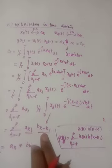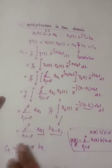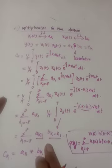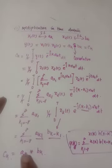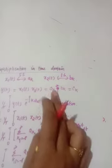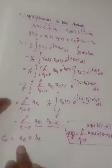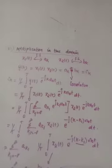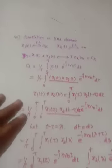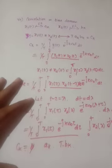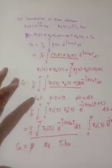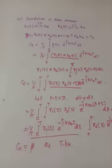And the convolution of the two signals in the frequency domain results in multiplication of the two signals in the frequency domain. This is the key concept to understand from the convolution property.